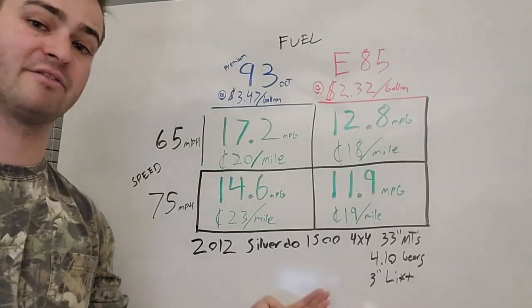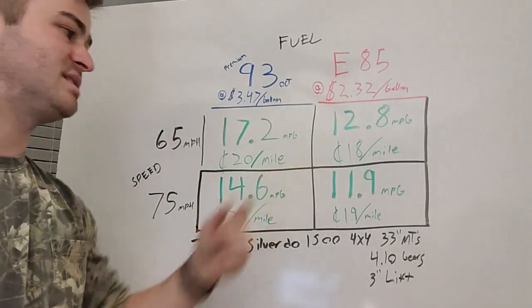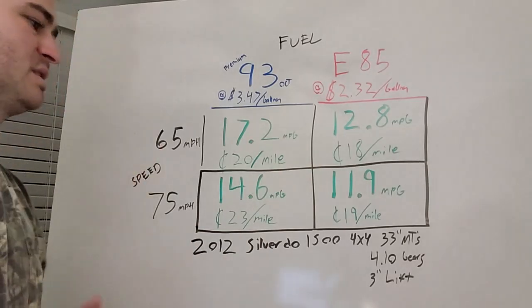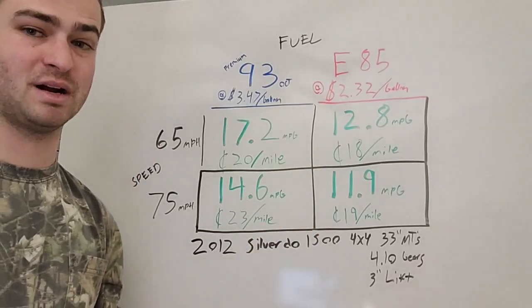However, when you go to the E85 flex fuel it is 18 cents a mile at 65 miles per hour and 19 cents a mile when going 75 miles per hour.